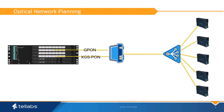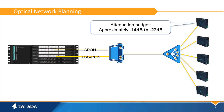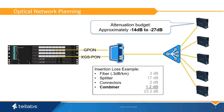When utilizing overlay networks, ensure that insertion losses are accounted for within the combiner in the total network budget. The XGS-PON combiner introduces 1.2 dB of insertion loss into the optical budget for each OLT.